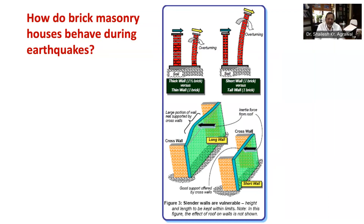Secondly, introduce horizontal bands at various levels; the most important one is at lintel level. Openings in masonry buildings make the construction weak — smaller the openings, larger is the resistance, so the sizes of doors and windows need to be kept small. Further, the tendency of walls to topple when pushed in the weak direction can be reduced by limiting the length-to-thickness (L/T) and height-to-thickness (H/T) ratios. Most design codes in the world specify limits for these ratios. A wall that is too tall or too long in comparison to its thickness is vulnerable to shaking in its weak direction.